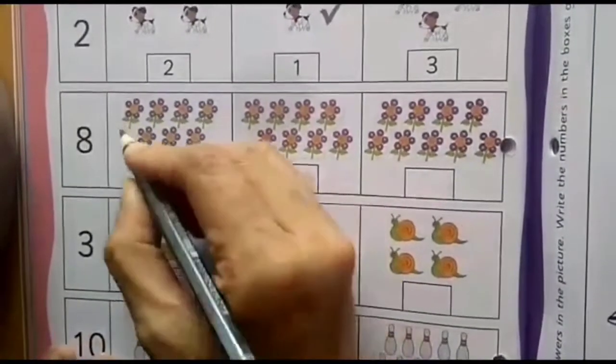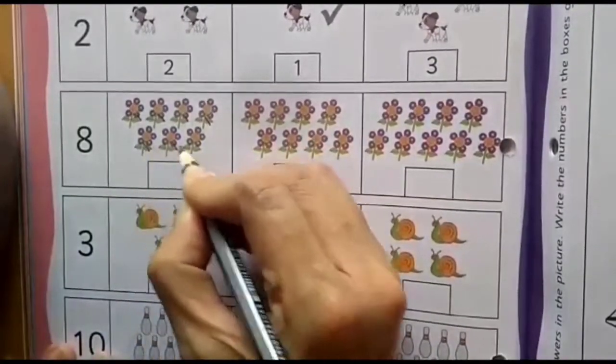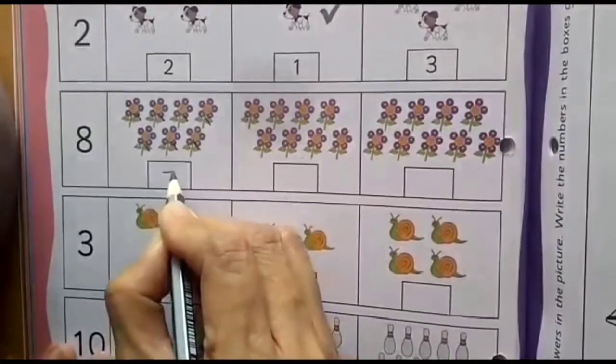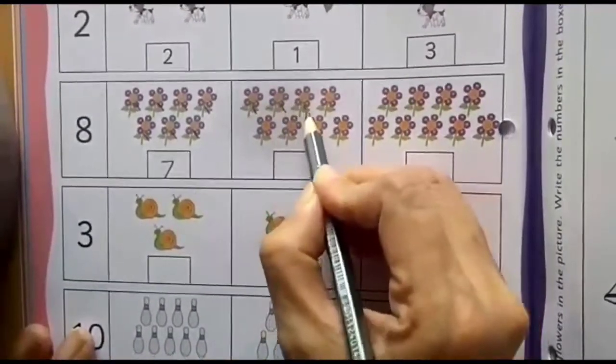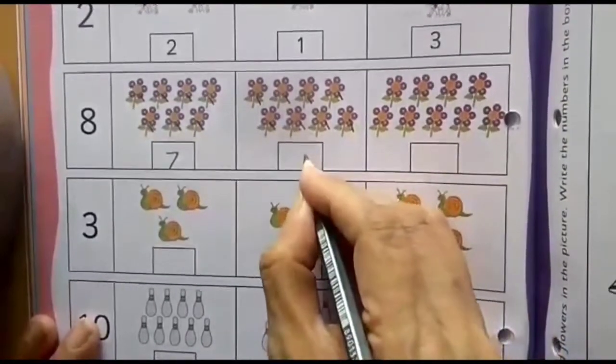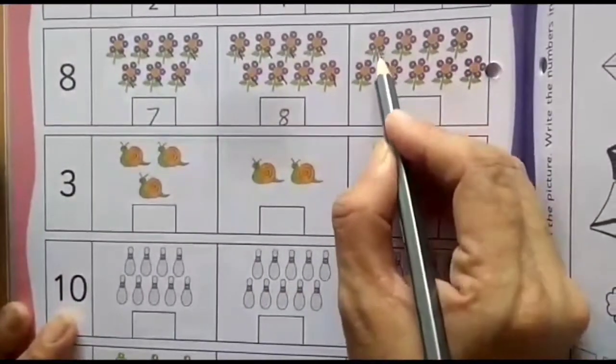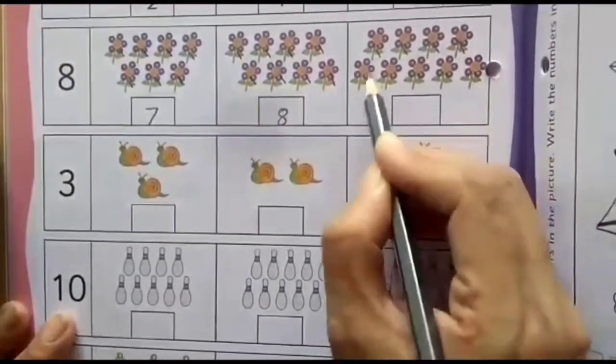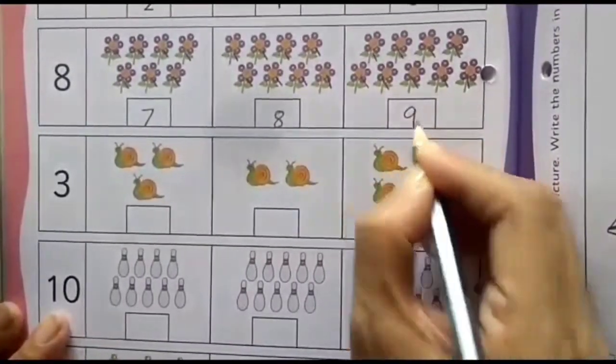Let's start counting. 1, 2, 3, 4, 5, 6, 7. So, number 7 will come here. Next, 1, 2, 3, 4, 5, 6, 7, 8. So, number 8 will come here. And here, 1, 2, 3, 4, 5, 6, 7, 8, 9. So, number 9 will come here.